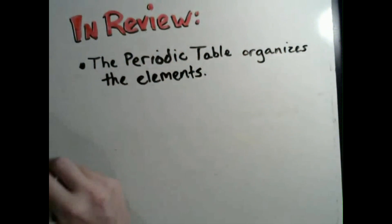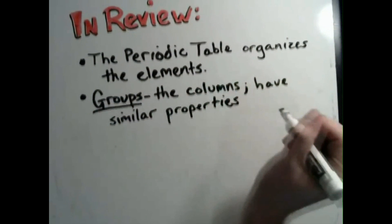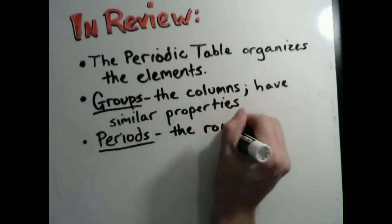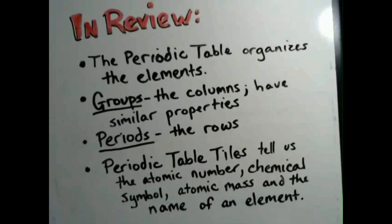In review, Dmitry Mendeleev invented an awesome way to organize the elements called the periodic table of elements. Columns on the table are called groups. Rows on the table are called periods. Tiles on the table tell you the specific type of atom, number of protons, the chemical symbol, its mass, and the name.